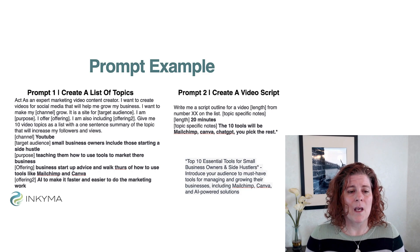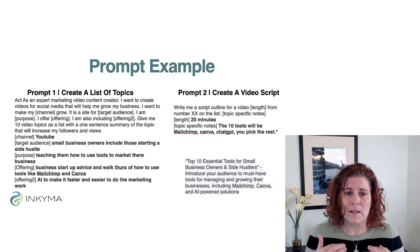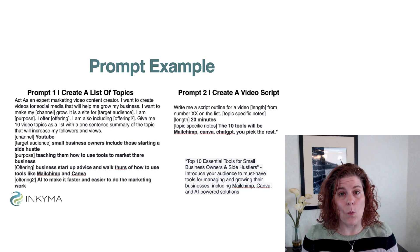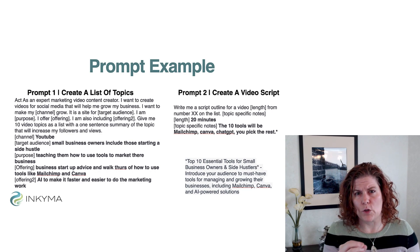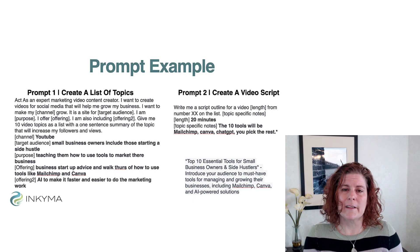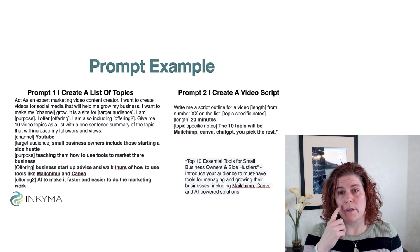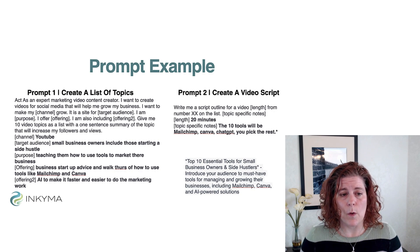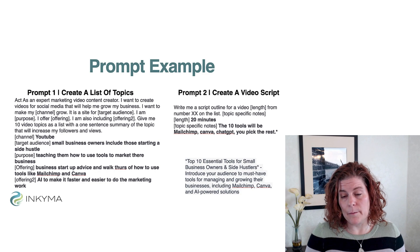Then give it instructions: 'Give me 10 video topics' — I want 10 specifically, not three and not fifty — 'as a list with a sentence that summarizes what each topic is so I can understand the direction.' I also like to list the variables underneath the prompt because it makes it easier to reuse. I've honed this prompt and want to reuse it over and over again, so just changing the variables rather than retyping them into the prompt saves time. For example, this one is for YouTube — you can see the target audience, purpose, and offerings. Once you get your list of topics, the next step is to ask it to write a script outline for a specific topic and video length.